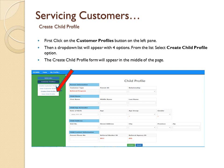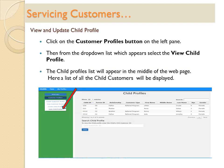Create Child Profile: click on the Customer Profiles button on the left pane. A drop-down list will appear with four options. From the list, select the Create Child Profile option. The Create Child Profile form will appear in the middle of the page. To view and update a child profile, click on the Customer Profiles button on the left pane, then from the drop-down list select the View Child Profile option. The Child Profiles list will appear in the middle of the webpage.